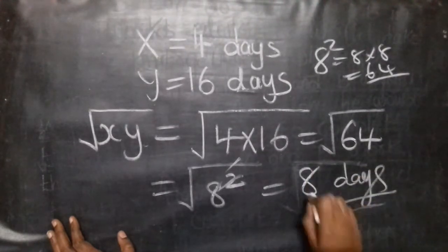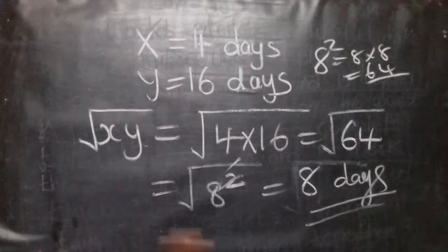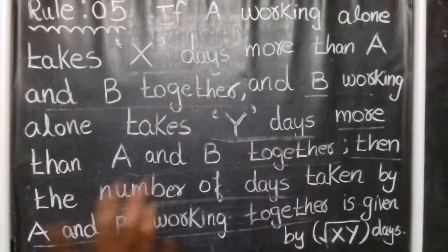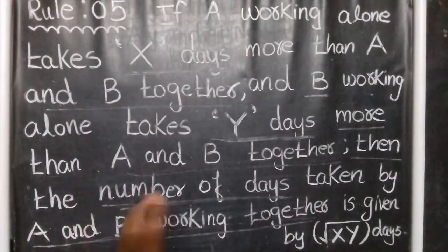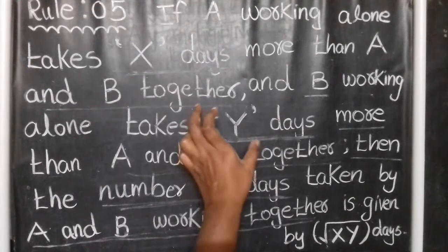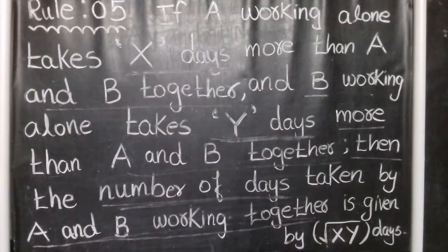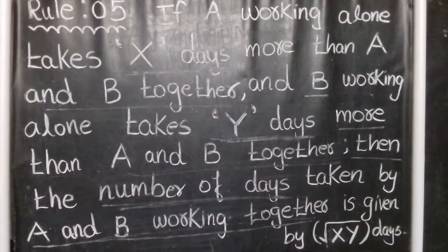The answer is 8 days. Mark option 8 days. So X and Y values are 4 and 16 — replace them in the formula. This shortcut applies in just a few seconds. The direct method also confirms the same answer.